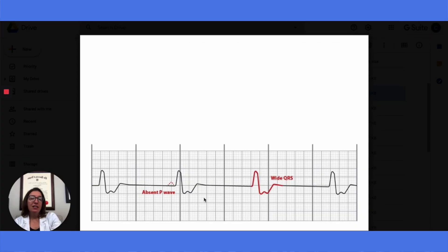Here we have an idioventricular rhythm. You can see we don't have any P waves here, and we have a really wide QRS, which is how we know that we are dealing with a ventricular rhythm. We can't assess the regularity of the atrial rhythm because we don't have P waves. But we can assess the regularity of the ventricular rhythm and it is regular.